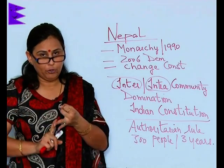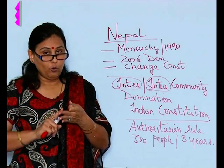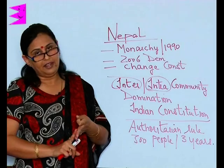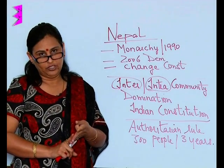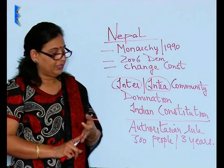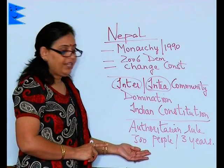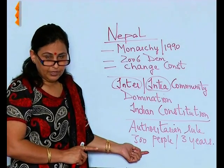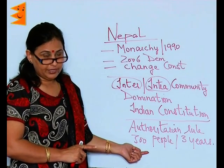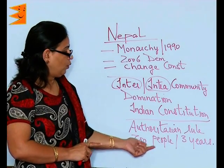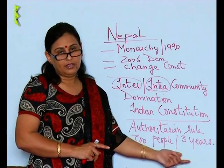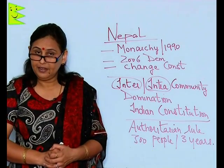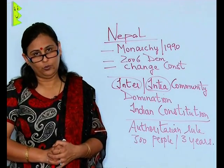They wanted a government of the people — one that would look after their needs and aspirations. It was 300 people in the Constituent Assembly who took three long years to write the Indian Constitution.